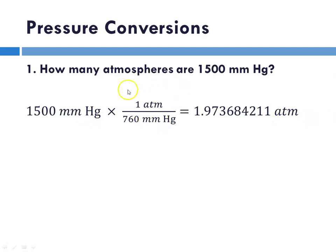We are going to multiply by a conversion factor. Our conversion here is that one atm is equivalent to 760 millimeters of mercury.